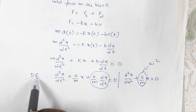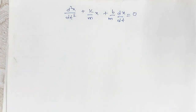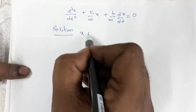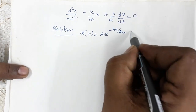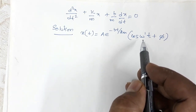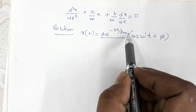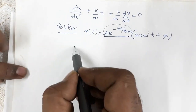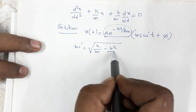This is a second-degree differential equation. Its solution can be written as: x(t) = A·e^(−bt/2m)·cos(ω't + φ). Here, ω' (omega prime) is the new angular frequency due to damping, and the entire term A·e^(−bt/2m) is the amplitude of the resultant oscillation. The new angular frequency is: ω' = √(k/m − b²/4m²).